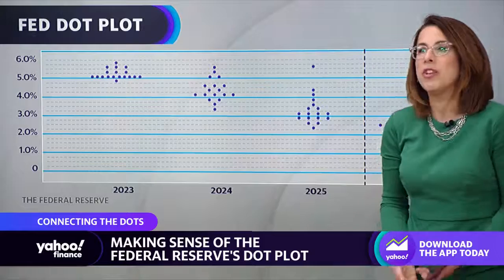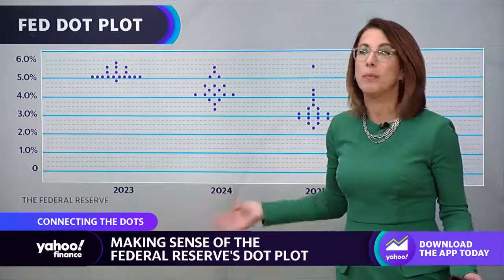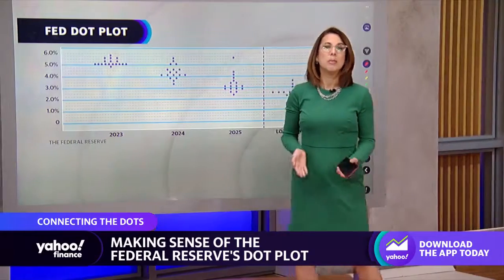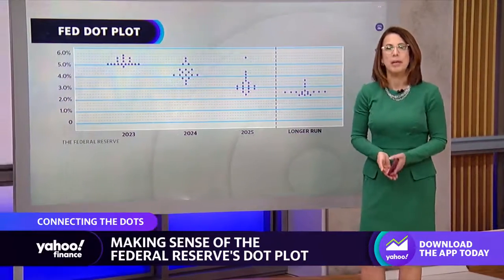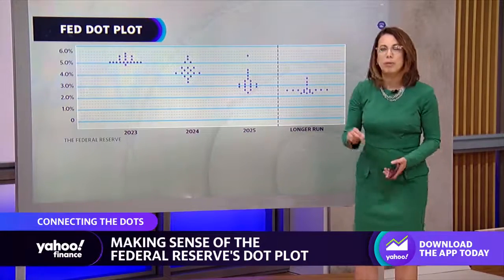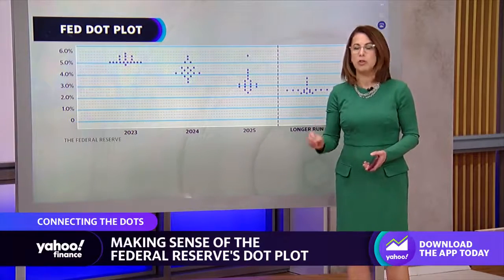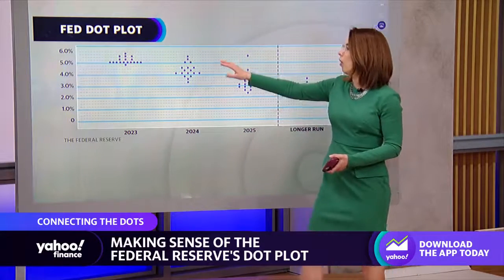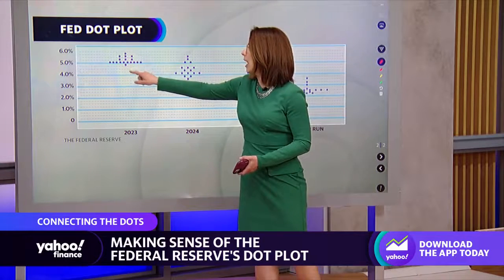Each dot represents a person — that's all the dots are. The dots are members of the Federal Open Market Committee. Some of them are currently voting members, some of them are not currently voting members. But it's where all of them anticipate rates to end up.